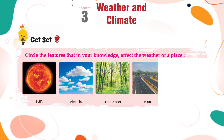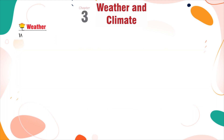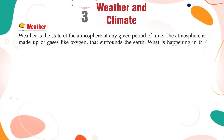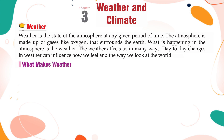Tree cover, roads, birds, weather. Weather is the state of the atmosphere at any given period of time. The atmosphere is made up of gases like oxygen that surrounds the earth. What is happening in the atmosphere is the weather. The weather affects us in many ways. Day-to-day changes in weather can influence how we feel and the way we look at the world.